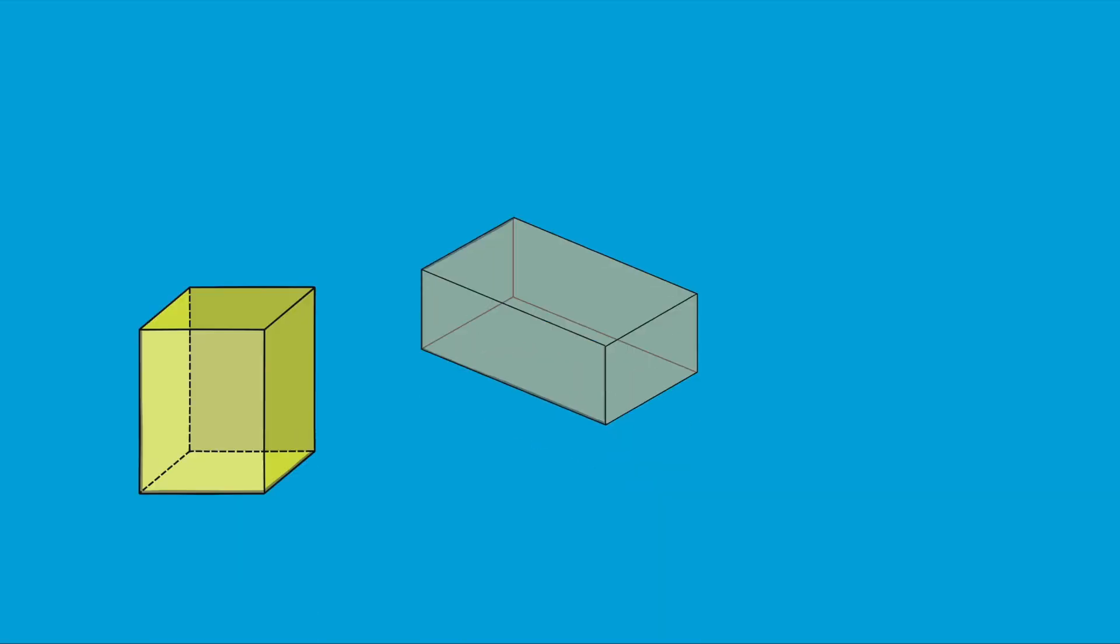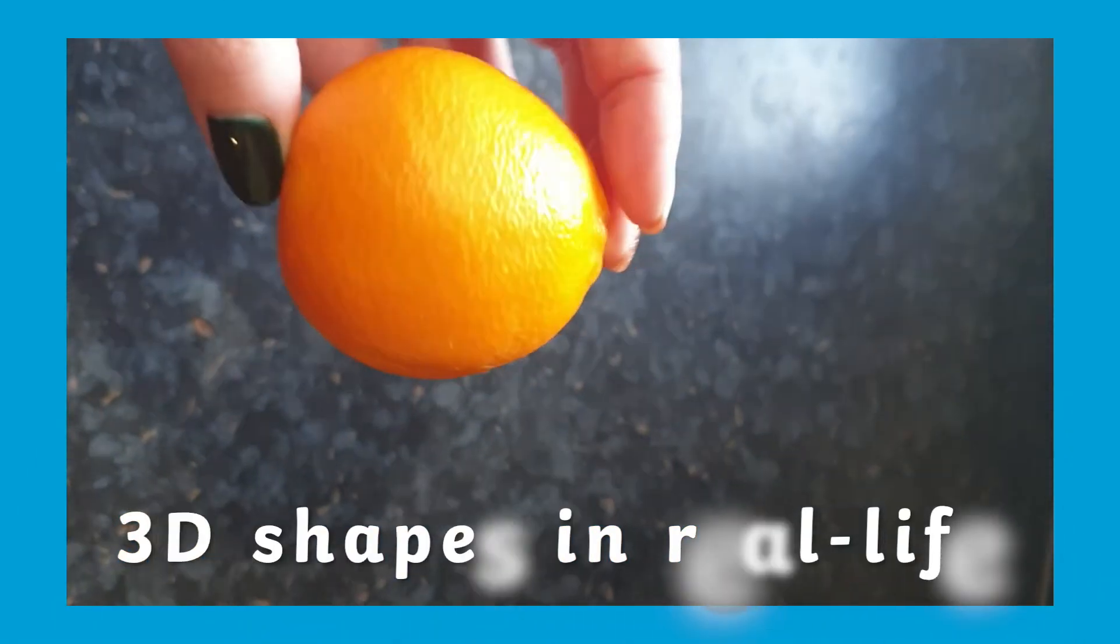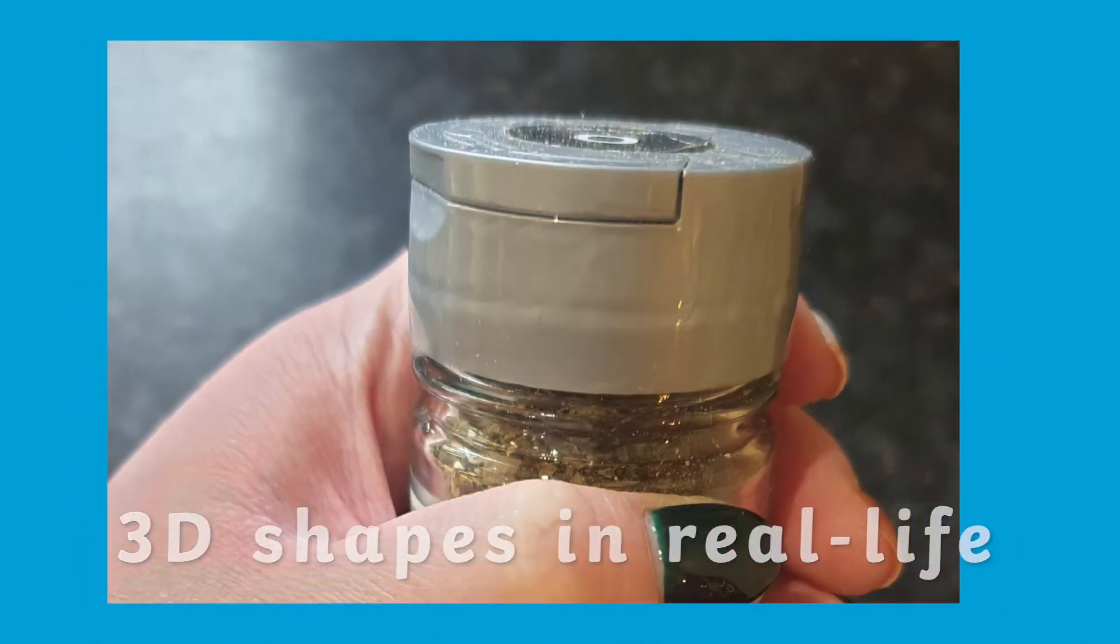Nets of shapes are a great way for children to learn about 3D shapes in the classroom or at home. They provide a practical and visual way for children to explore different 3D shapes and their properties. The fantastic thing about teaching 3D shapes is that they're all around us.